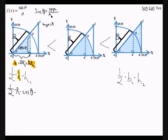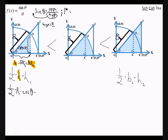We can take the hypotenuse to the other side by multiplying both sides by the hypotenuse. Remember, hypotenuse is R. We can use the principle of substitution. So R times the sine of theta is equal to the opposite.